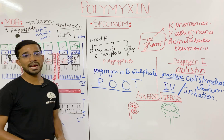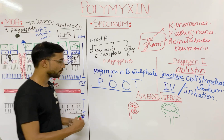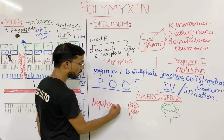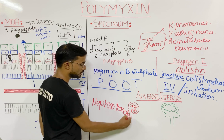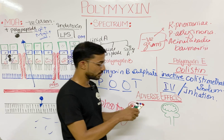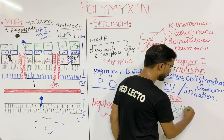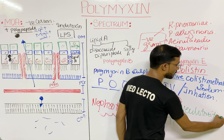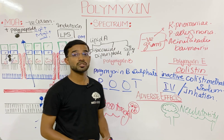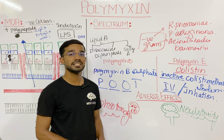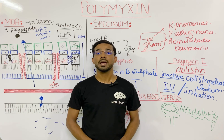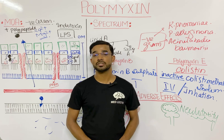Looking at the adverse effects, there are two most important ones. First is nephrotoxicity — it will affect your kidneys. Second is neurotoxicity — it affects the nervous system, in which you will see weakness of the muscles, since muscles are under the control of the nervous system. This is all about the mechanism, spectrum, and adverse effects of polymyxin.